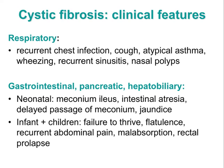In the GI tract, pancreas and hepatobiliary system, you may see meconium ileus, intestinal atresia or delayed passage of meconium or jaundice in the neonatal period. In infants and children, they may present with failure to thrive, flatulence, recurrent abdominal pain, malabsorption or rectal prolapse.